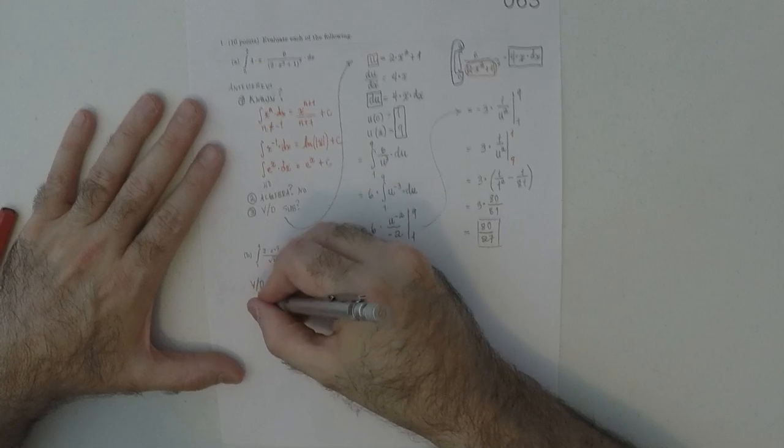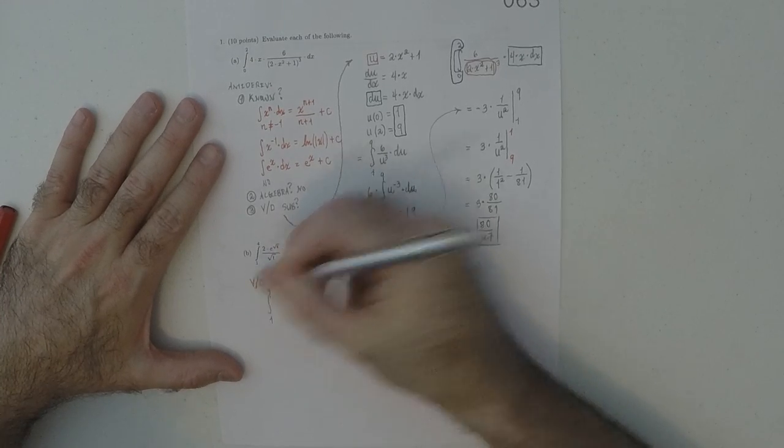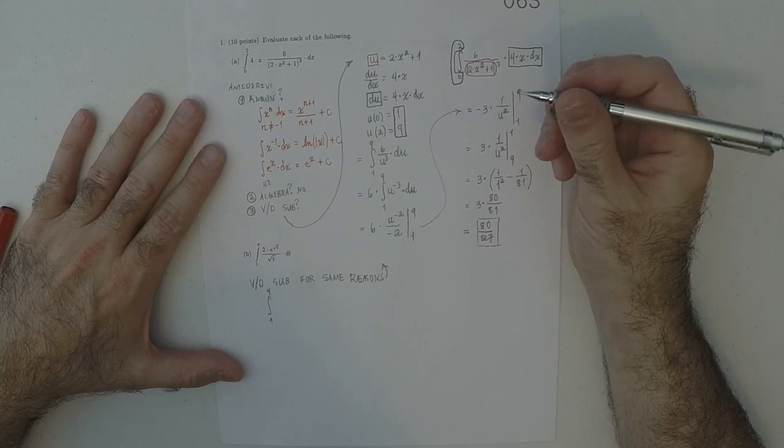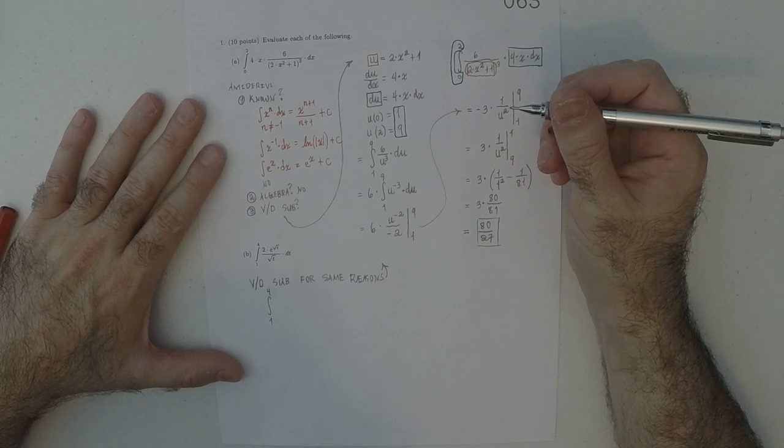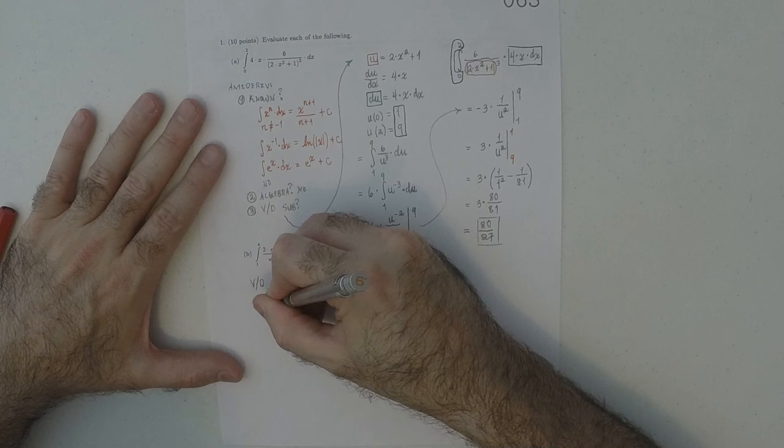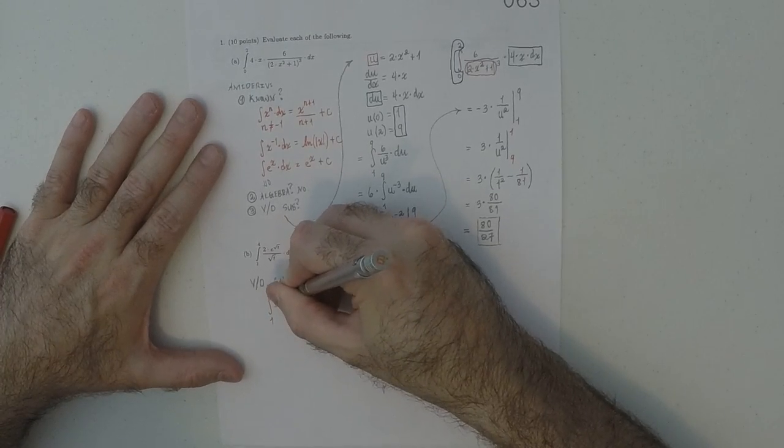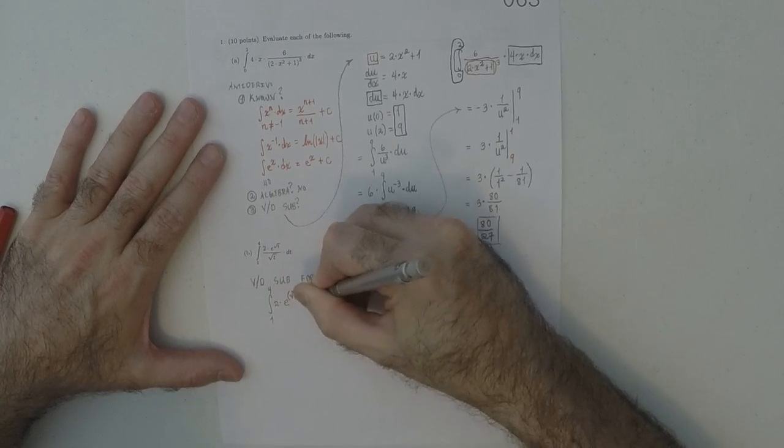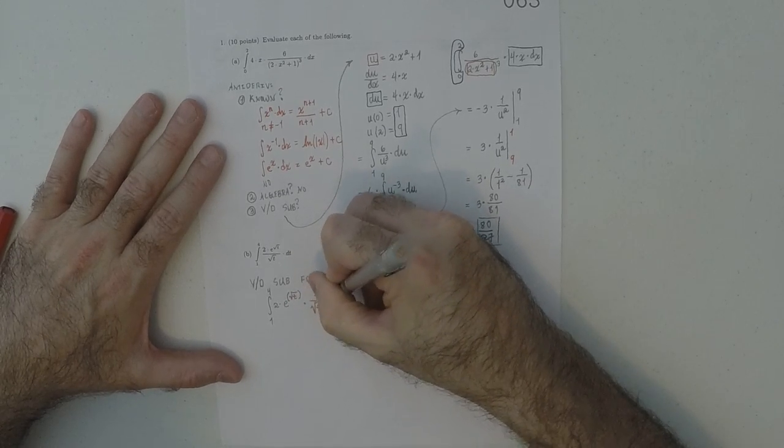So, to make this look a little nicer, I'm going to write it as the integral from 1 to 4. I'll put a 2 here. I'll leave that 2 here. And then, write this as exponential of square root t, like so. And then, multiply it by 1 over square root t dt. So, I'm going to look at it like that.